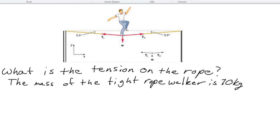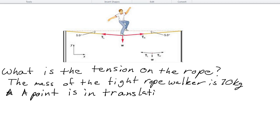There are a few assumptions we need to make when doing problems like this. The first major assumption is that the tightrope walker is a point — a single point — that is in, according to Newton's first law, translational equilibrium.